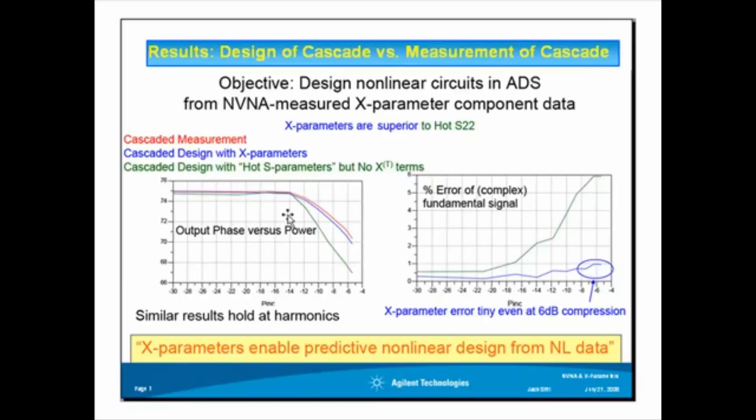with the S and the T terms. And, the green trace is the results of the hot S parameters method without the T terms. So, it is clearly shown that the hot S parameters method fails in the region of highly nonlinear stimulus, whereas the X parameters method with the S and T terms result in very accurate characterization that matches closely to the measured results.